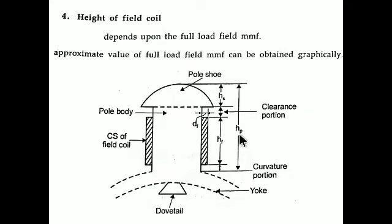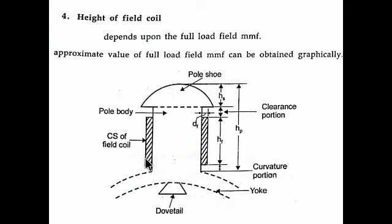Before calculating the height, consider some data about the construction. This is a dovetail pole construction: the yoke has a dovetail fixing, and below it is the pole region. The overall height of the pole hp consists of three heights: hs (height of the pole shoes), df (clearance gap for winding), and hf (height of the field coil). The shaded portion represents the field coil, and we are going to find the hf value.